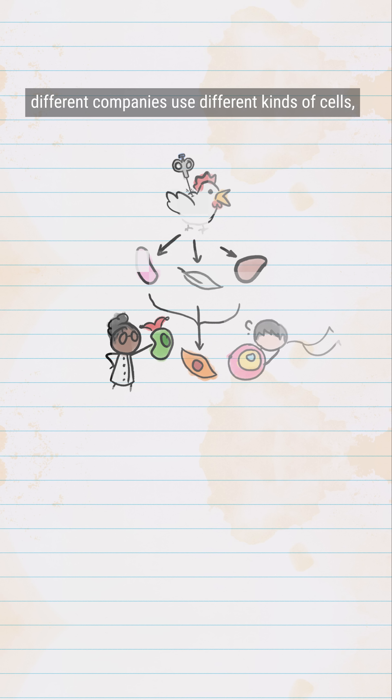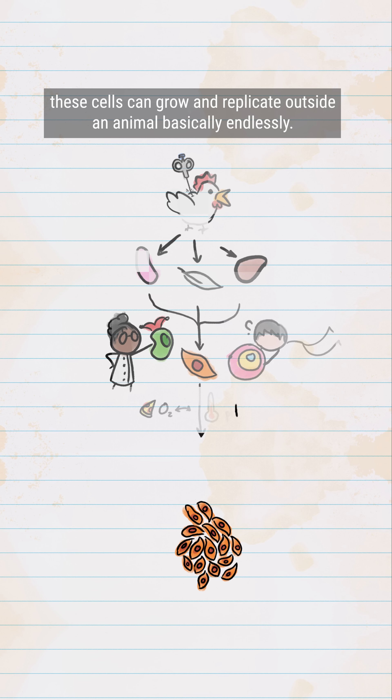Different companies use different kinds of cells, and the industry as a whole is still figuring out what kinds work best. But the idea is that given the right conditions — the right temperature, the right pH, the right nutrients, the right amount of oxygen, and agitation — these cells can grow and replicate outside an animal basically endlessly.